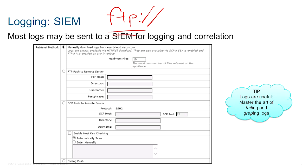Your ESA can listen on the FTP port. You can go to an IP interface and enable FTP service on that interface — typically the management interface. This way, as an administrator, you can FTP to your ESA using its hostname or IP address and manually download logs yourself.